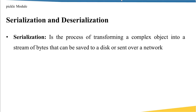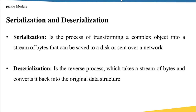Serialization is the process of transforming a complex object into a stream of bytes that can be saved to a hard disk or sent over a network. One common use case is when you want to run a time-consuming process and restore the results quickly later on. The perfect solution is to dump the result to the hard disk, and serialization helps you do that by converting data into bytes that can be saved there.